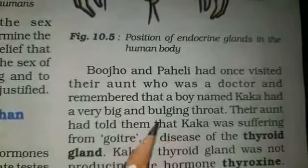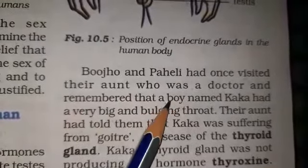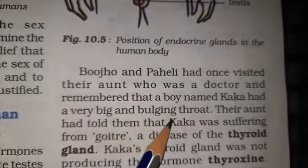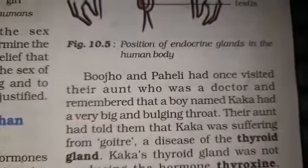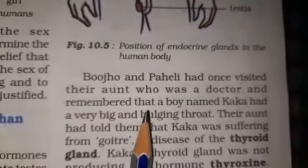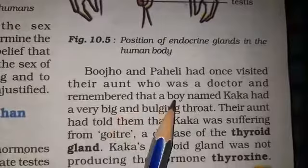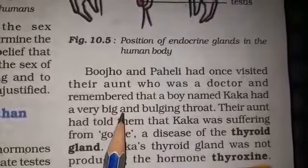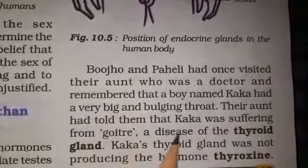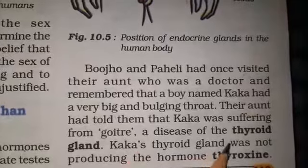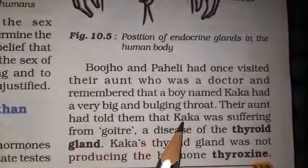Paheli and Bujo once visited their aunt who was a doctor. They remembered a boy named Kaka who had a very big and bulging throat. Their aunt had told them that Kaka was suffering from goiter, a disease of the thyroid gland.